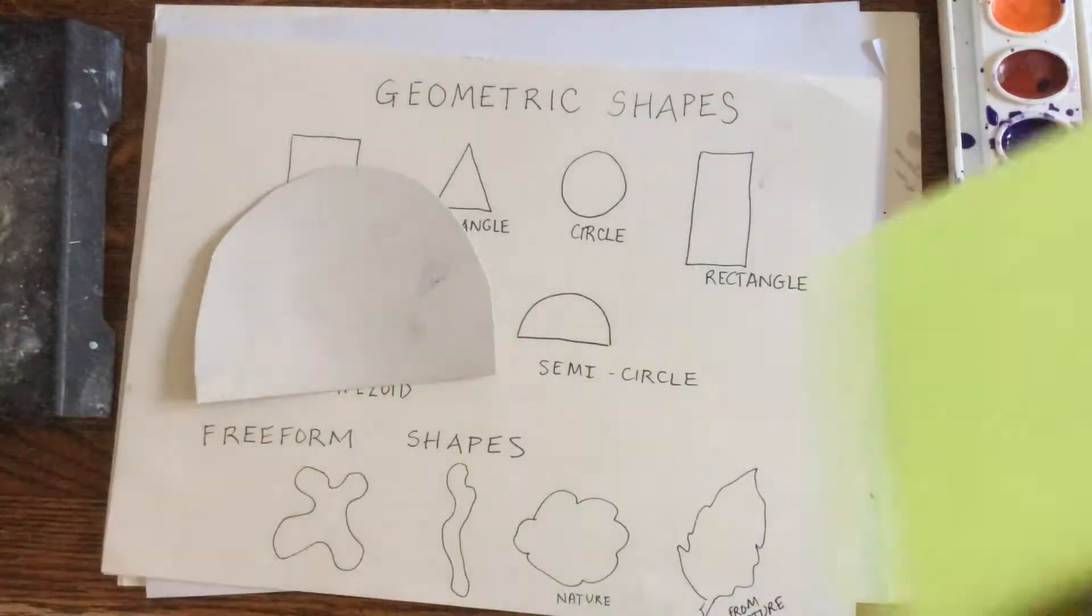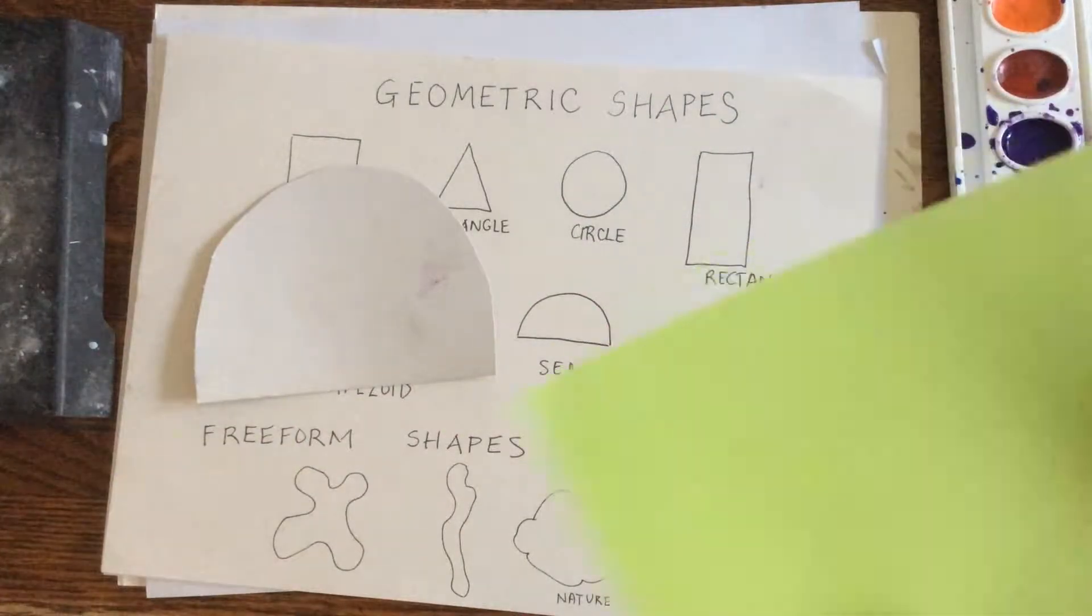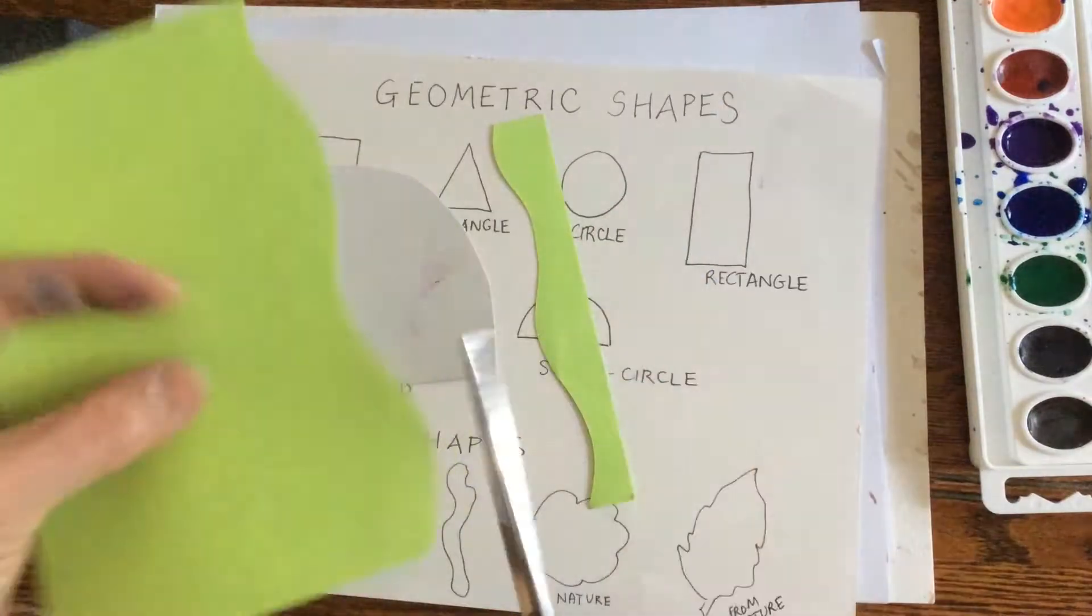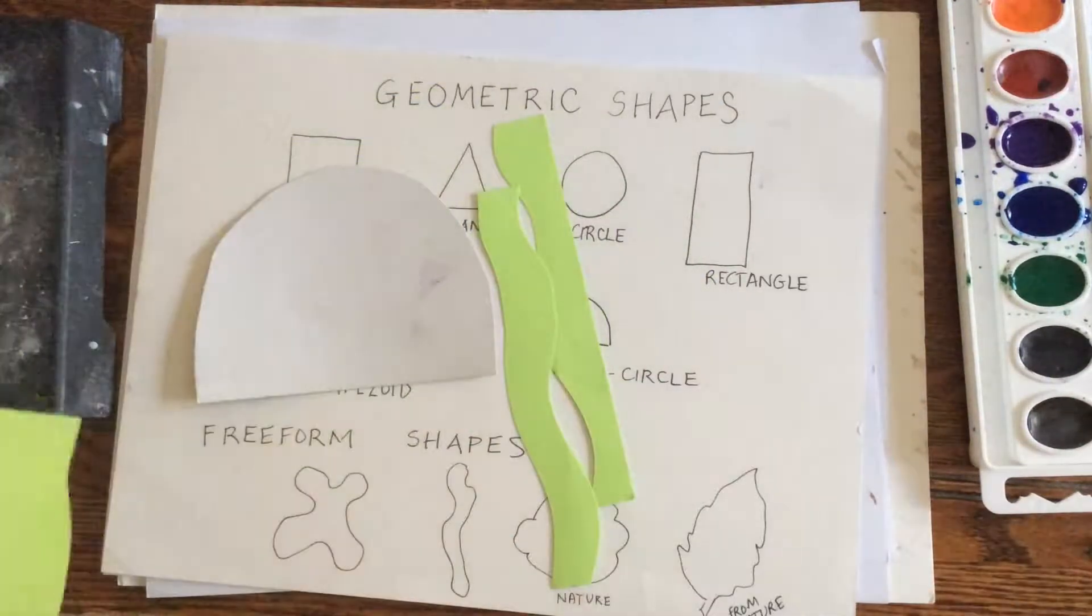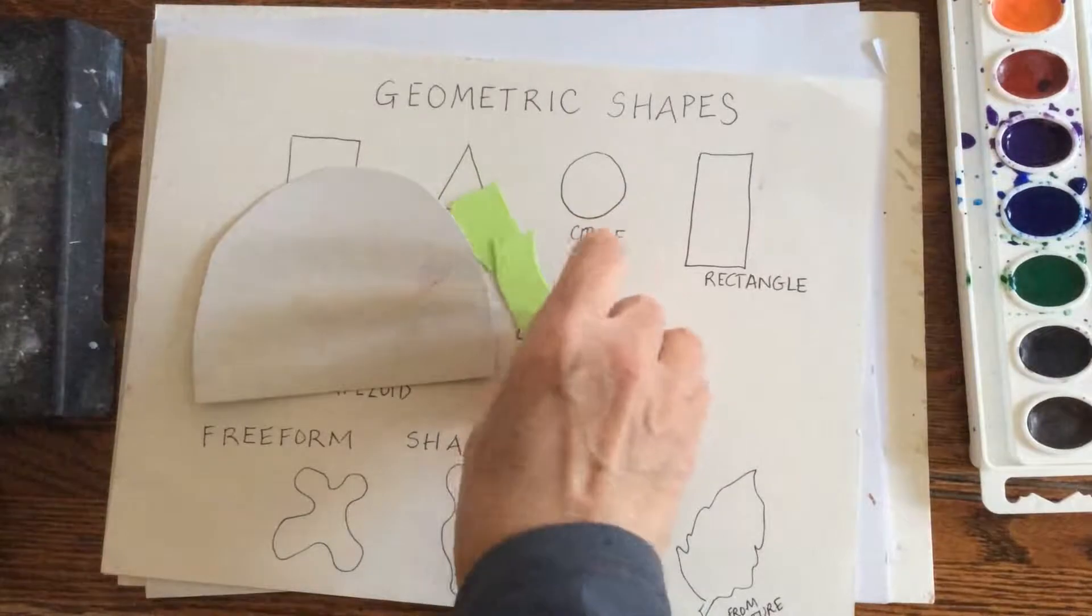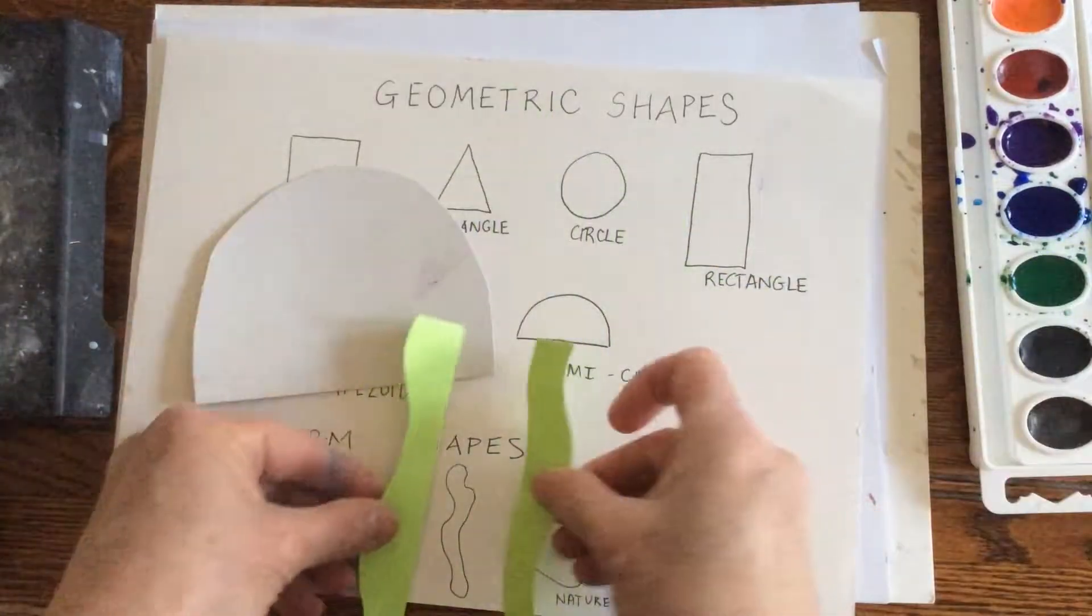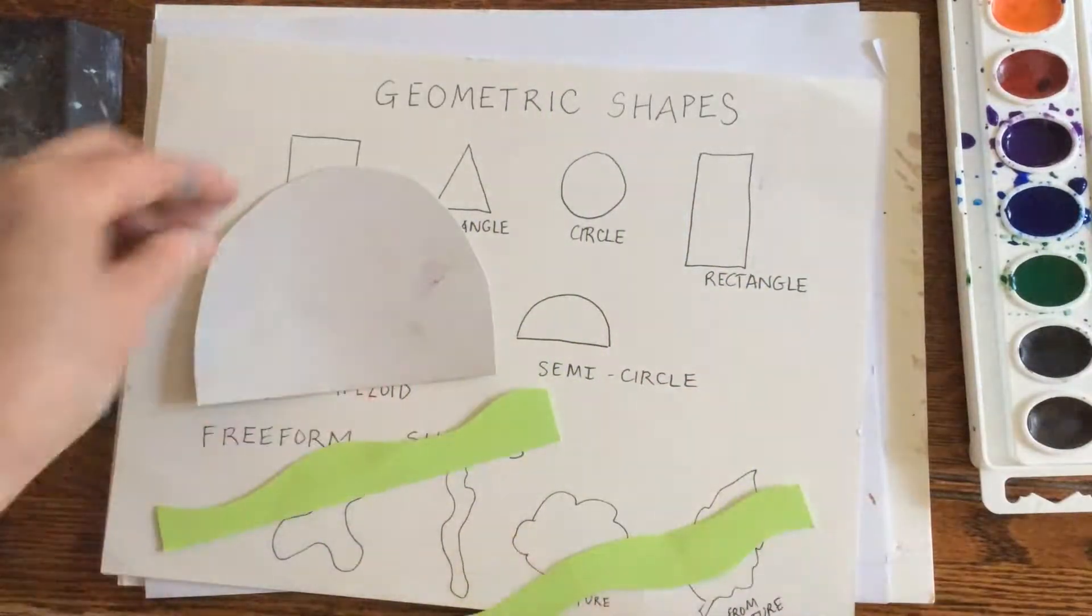For the tentacles of the squid, we're going to use free-form shapes which are kind of wiggly. They don't really have names and we definitely don't use them in math.